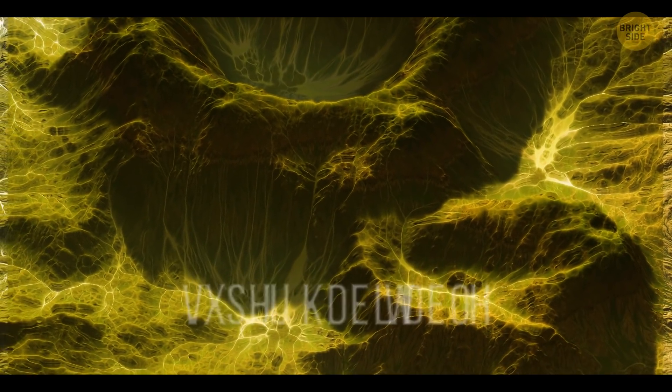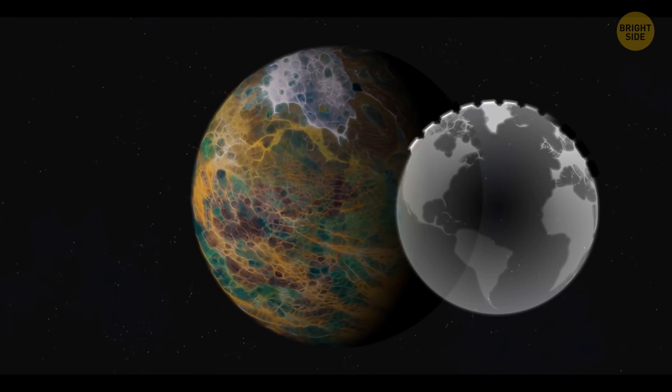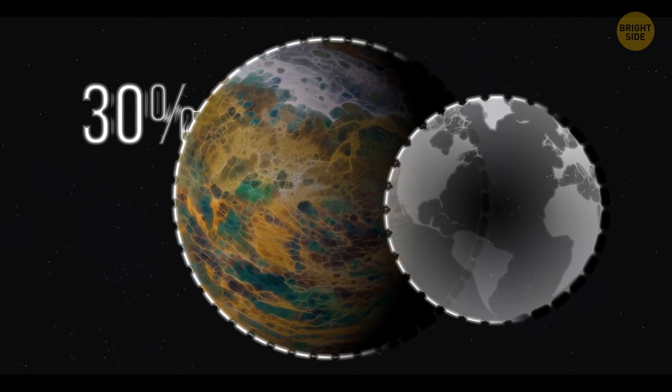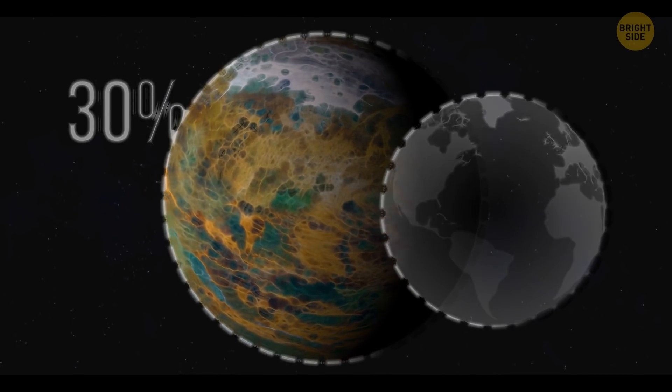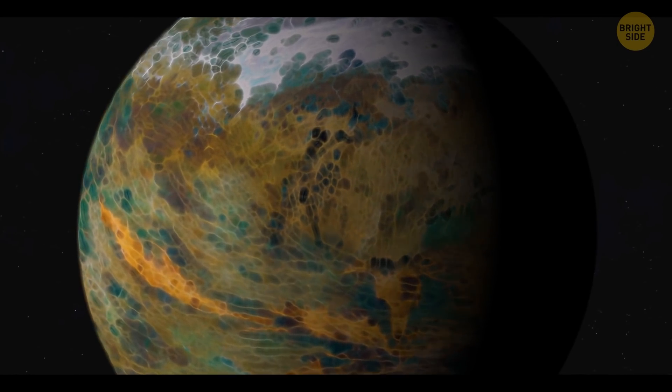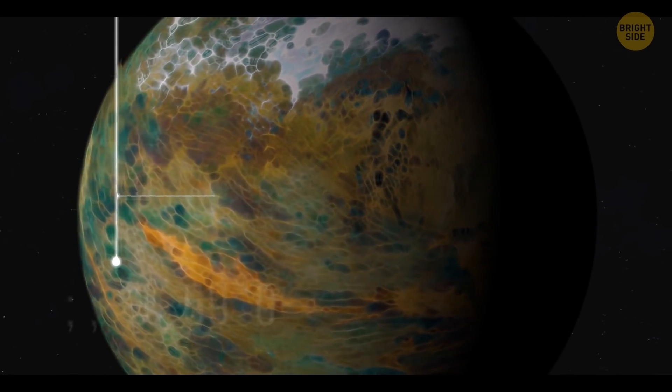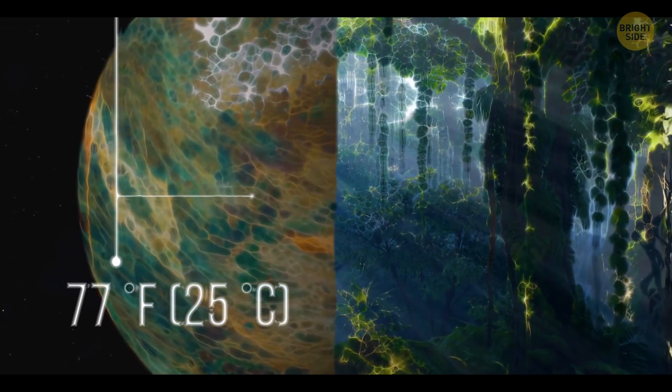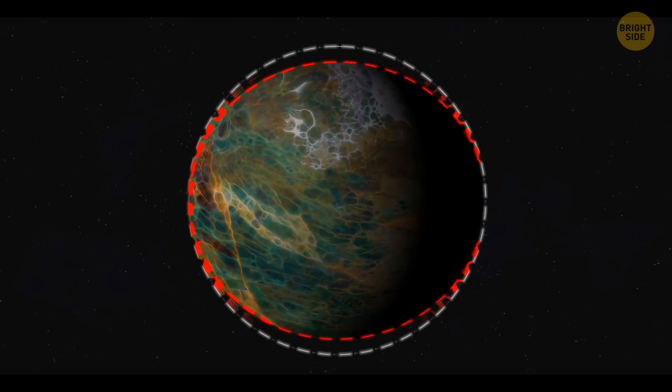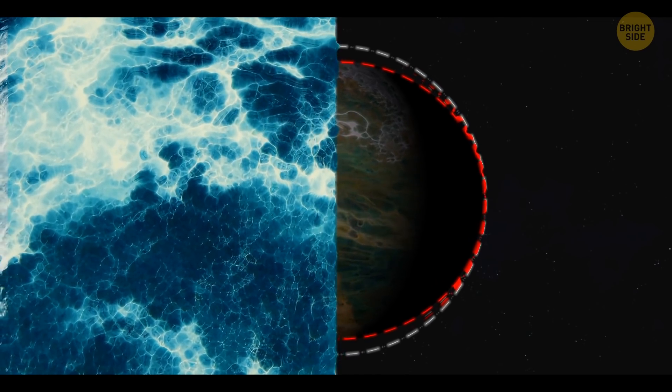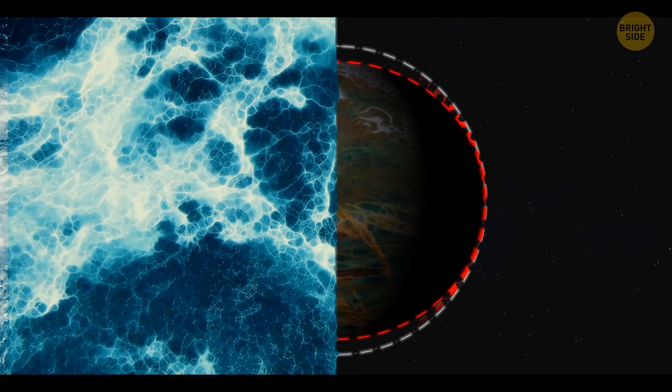Super-habitable planets would have to be 30% larger than Earth and twice as heavy. This would create stronger gravity, which would make the atmosphere on the planet denser and with a higher concentration of oxygen. This, in turn, would raise the average temperature on the planet to a perfect 77 degrees Fahrenheit. So plants would thrive there. Also, stronger gravity makes the surface of the planet flatter. So there might be more oceans there than on Earth. This would make aquatic life much more diverse.